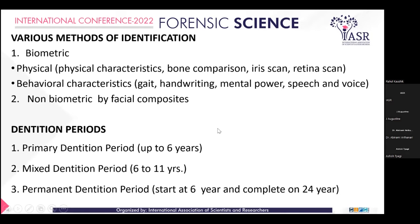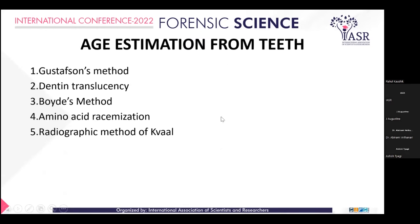Regarding dentition periods: the primary dentition period is up to six years; the mixed dentition period is from six to eleven years; and the permanent dentition period starts at six years and is complete at 24 to 25 years of age.